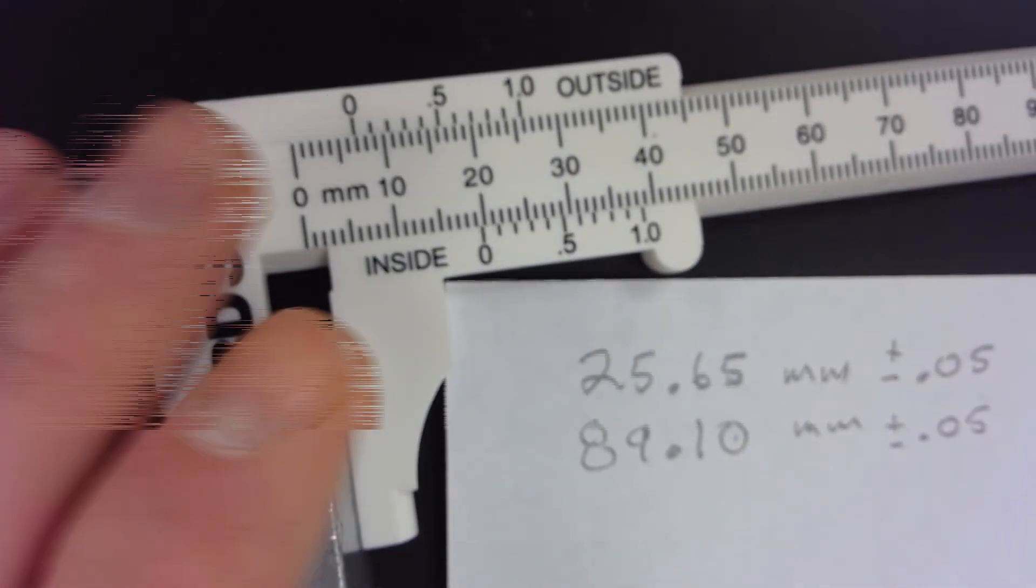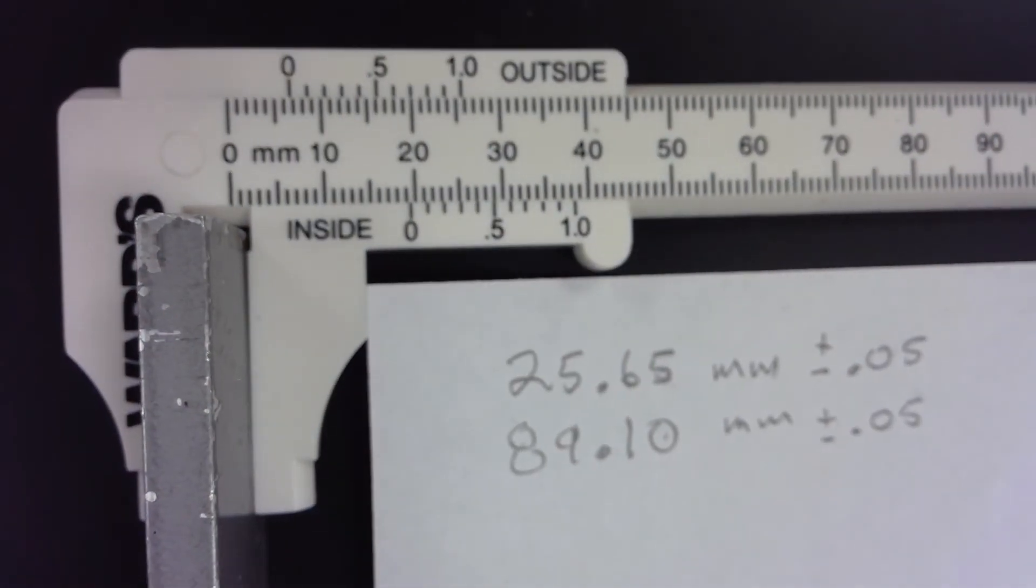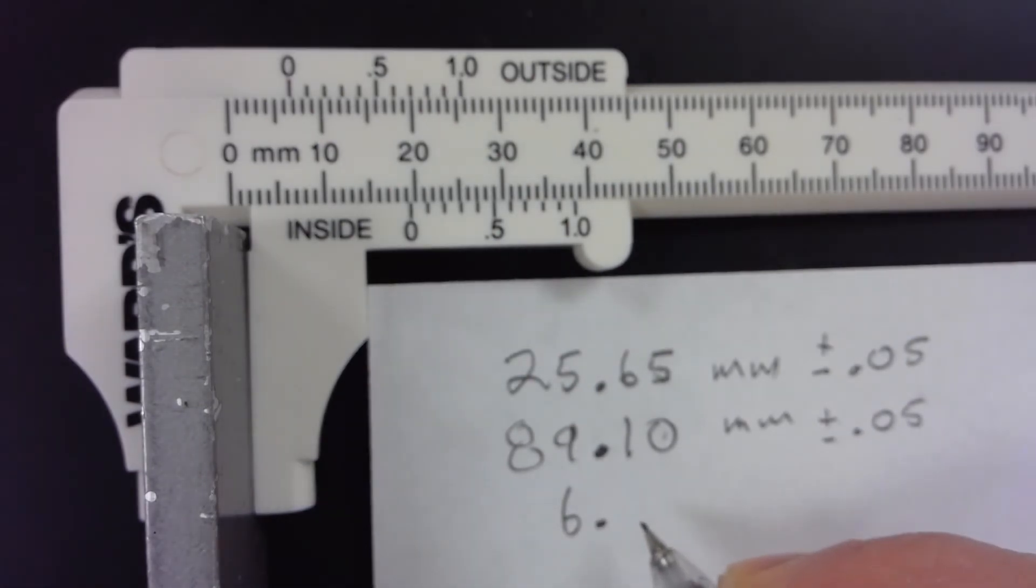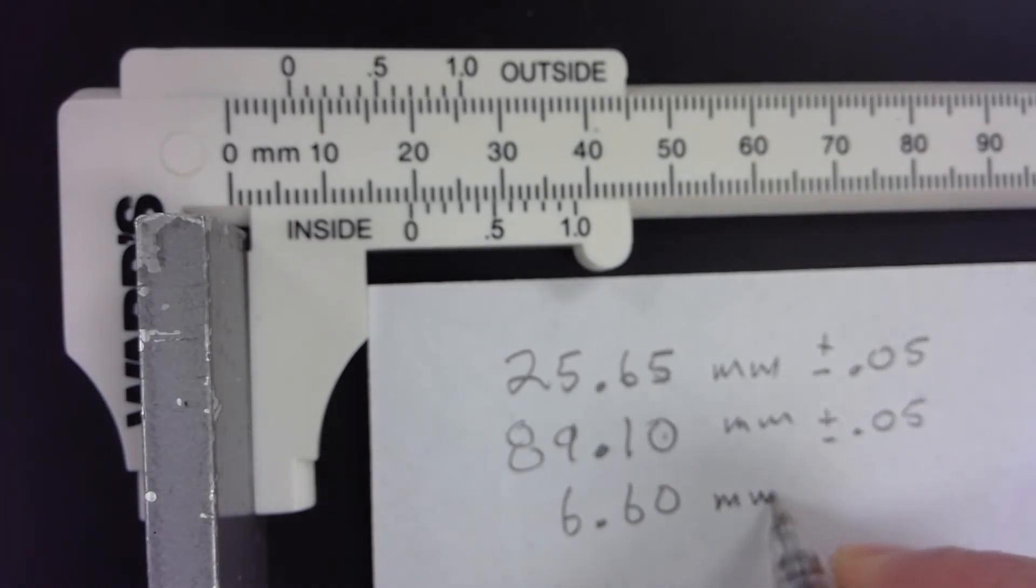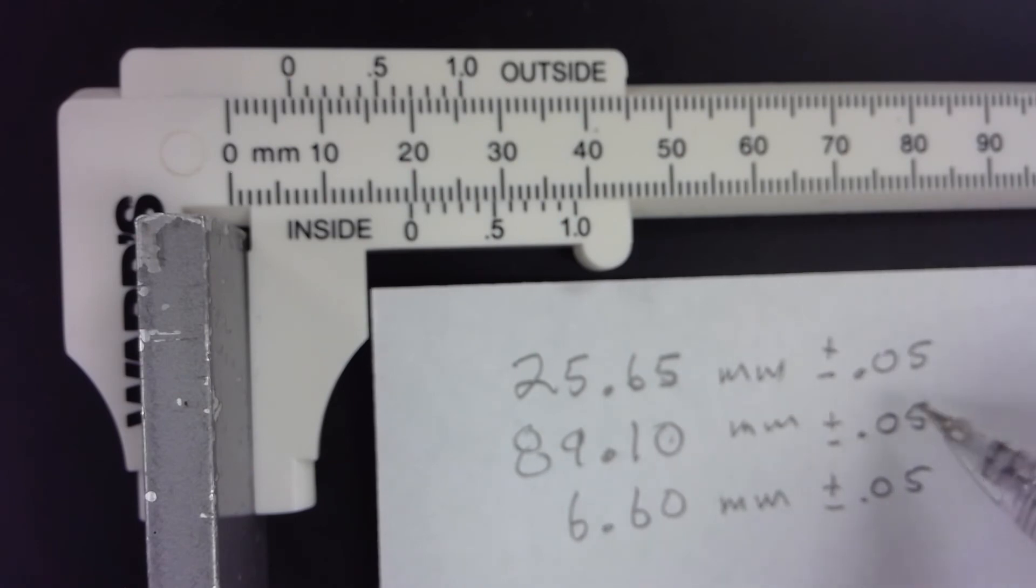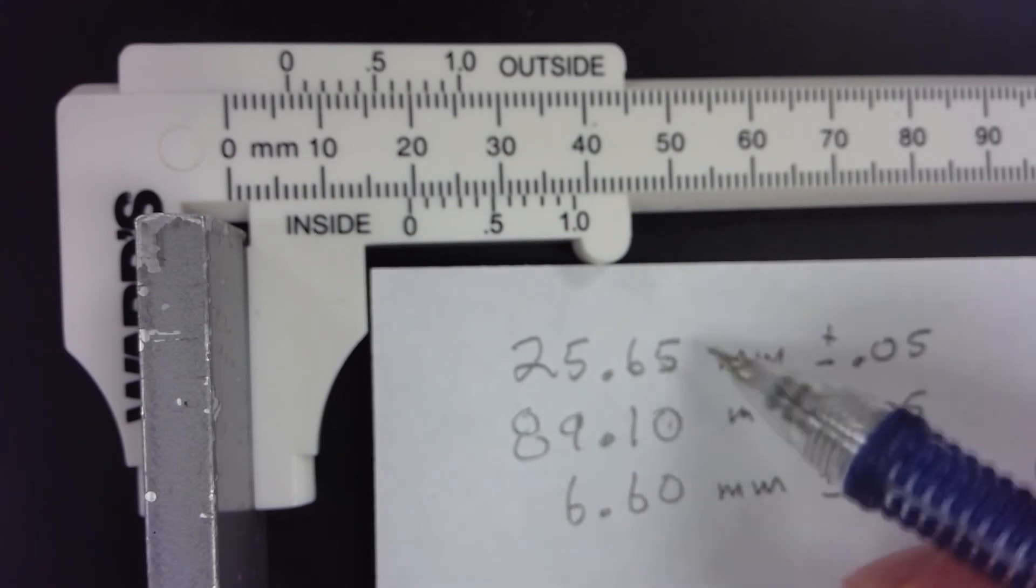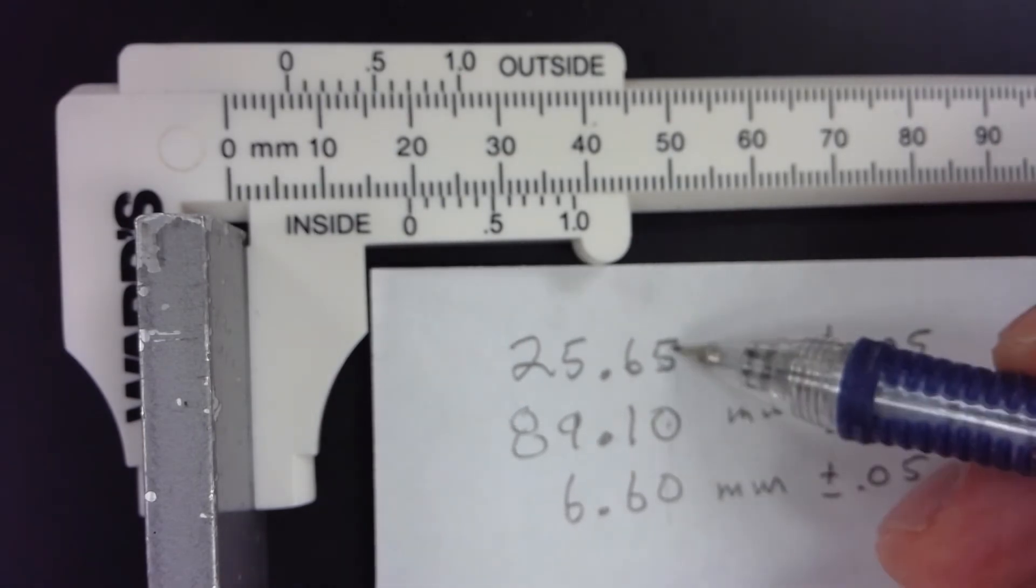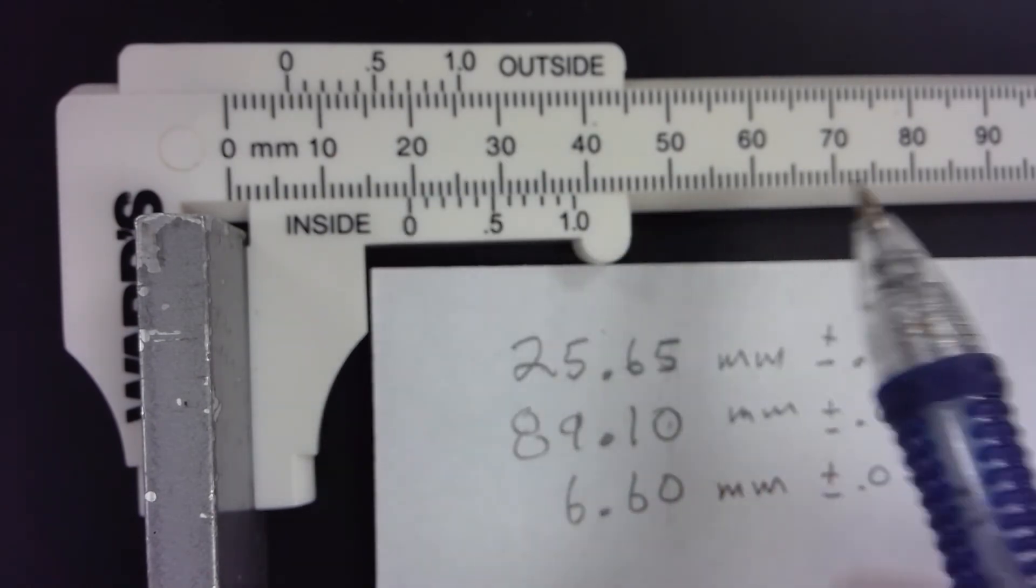So we would write that this dimension is 6.60 millimeters. The uncertainty is half of that last digit. We're not very concerned in physical science about uncertainties here. We just want to read this to the most precise measure allowable, which is where we estimate this last digit to the half.